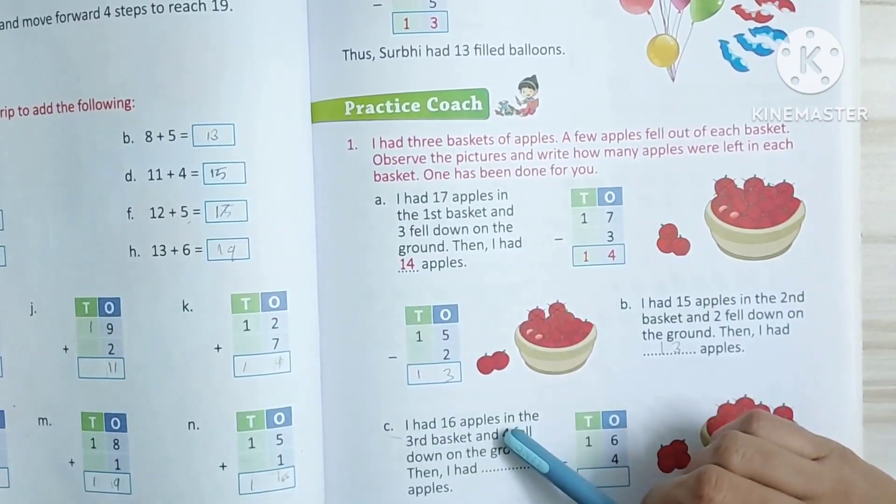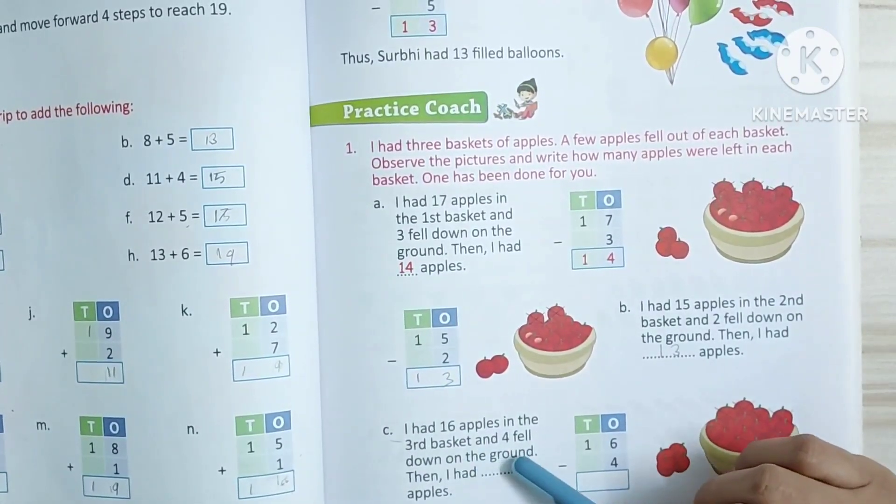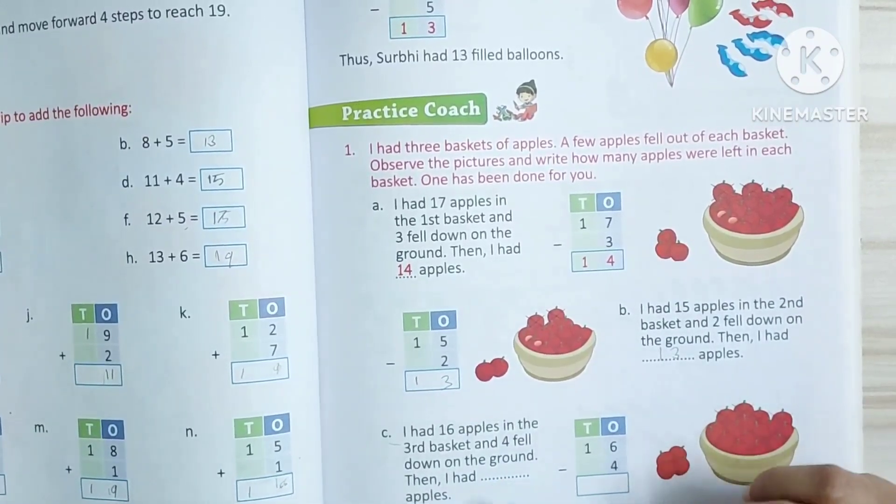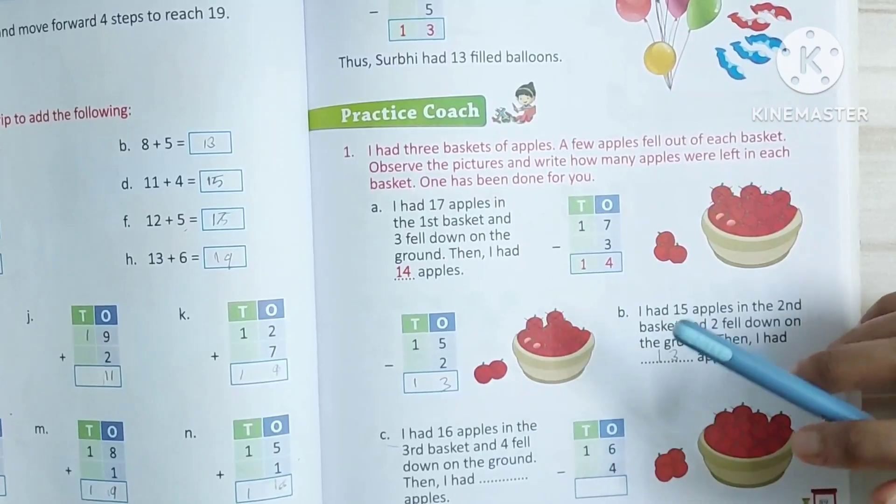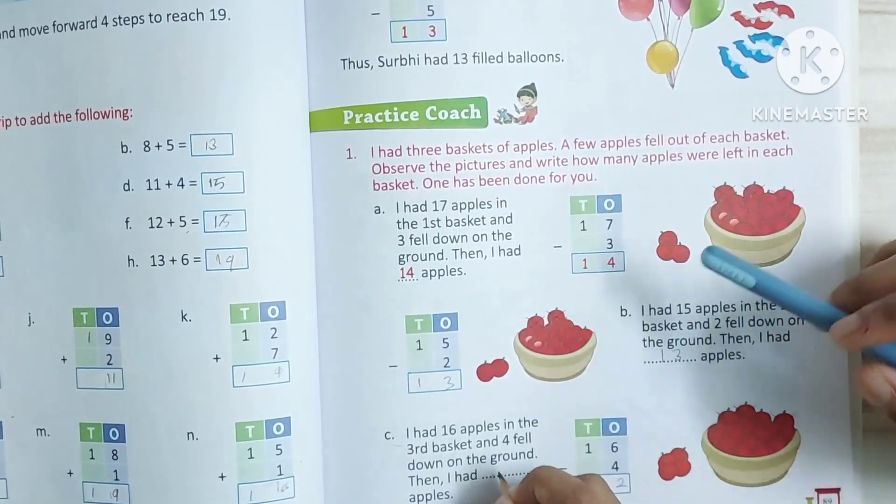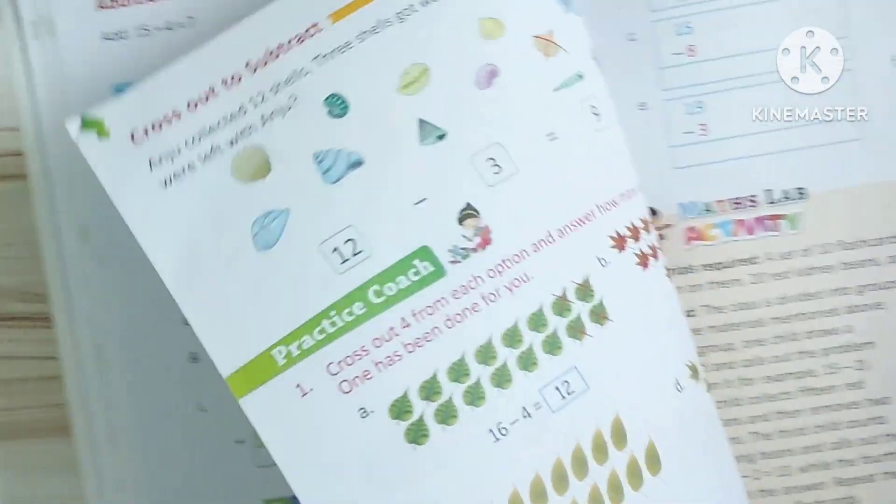I had 16 apples in the third basket and four fell down on the ground. Then I had blank apples. 16 minus 4 or 6 minus 4 is 12. Good. Understood? Yes. Okay.